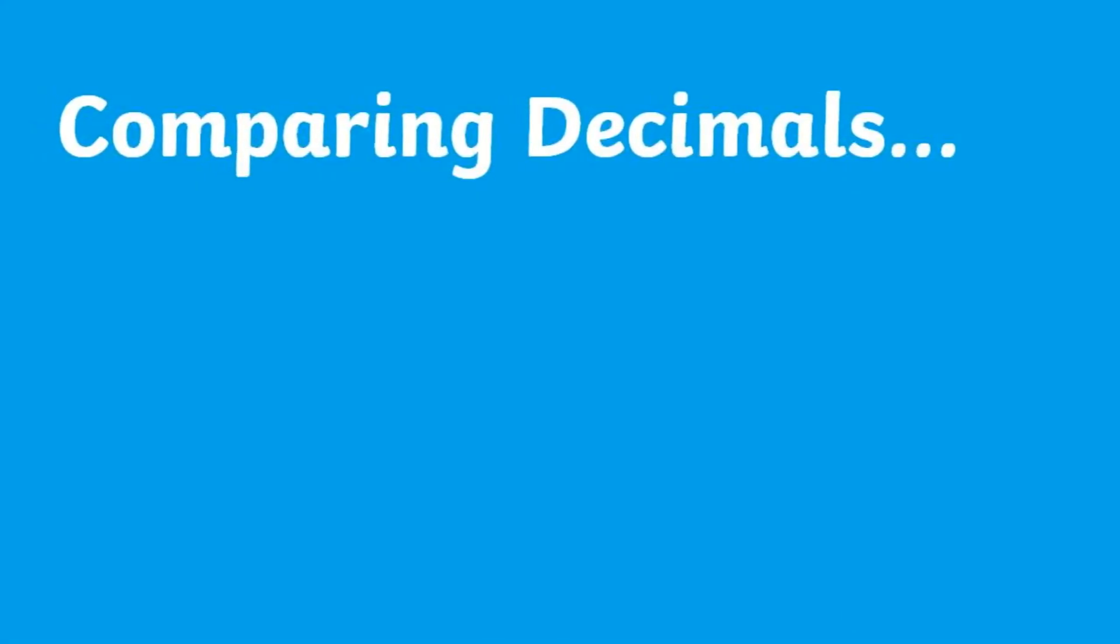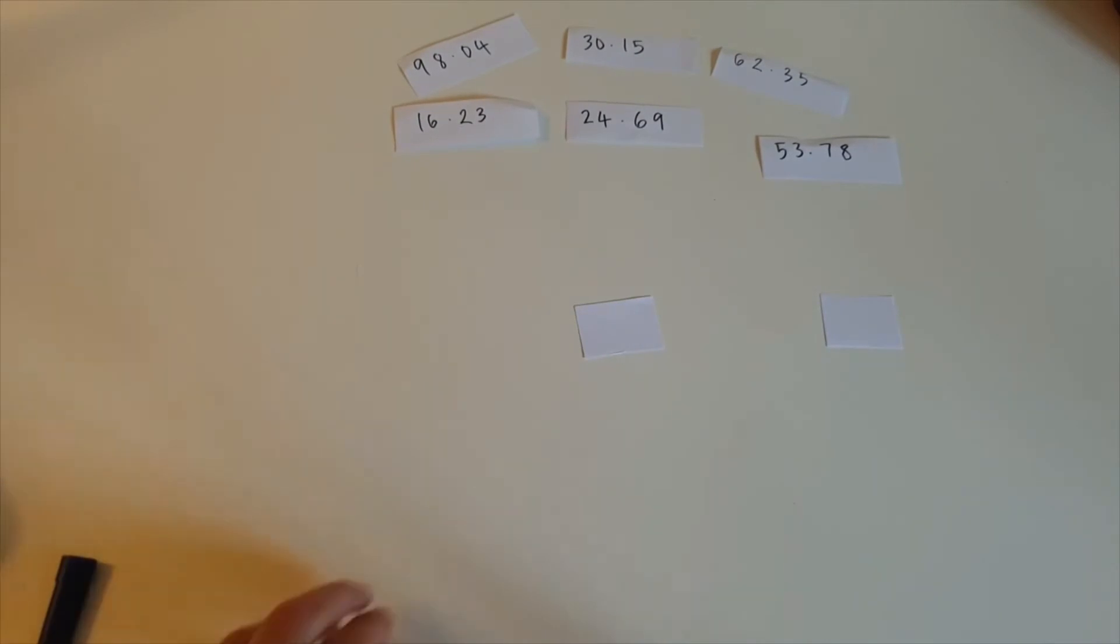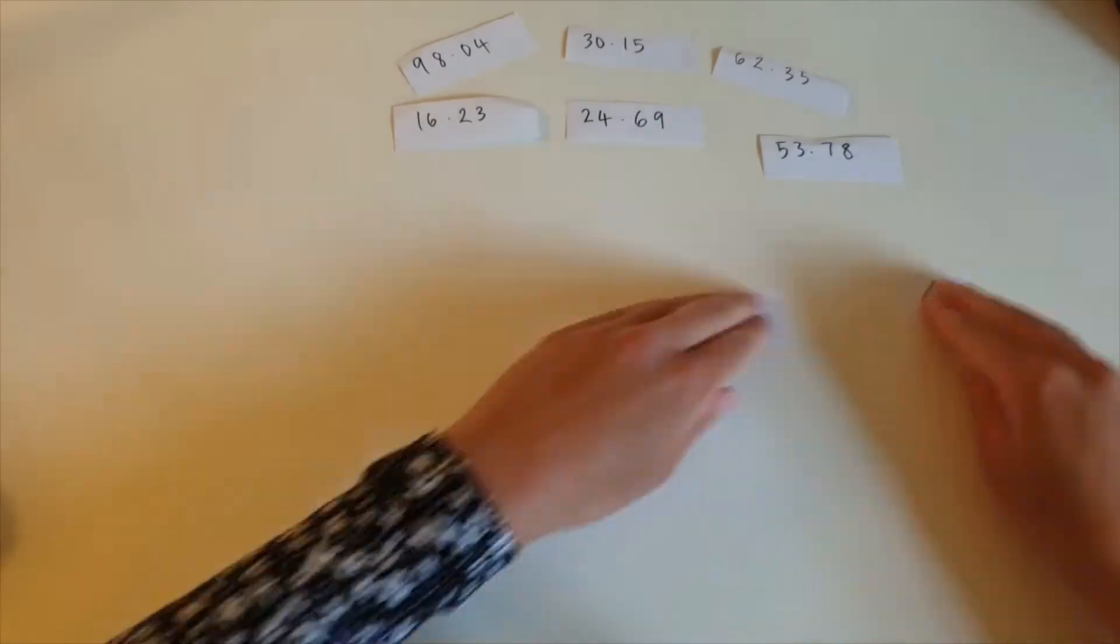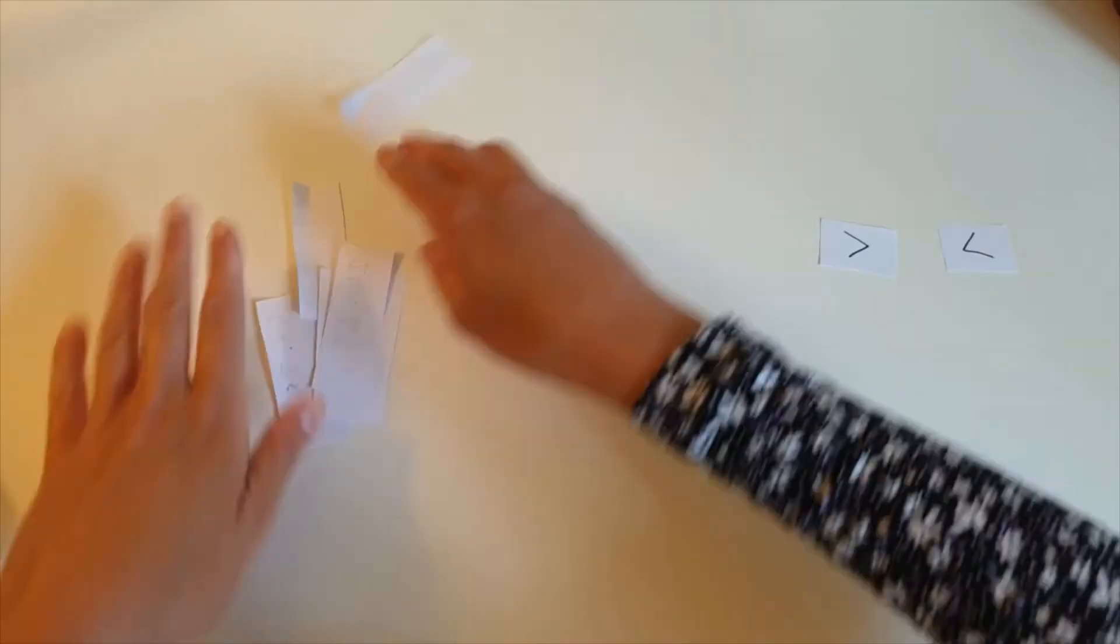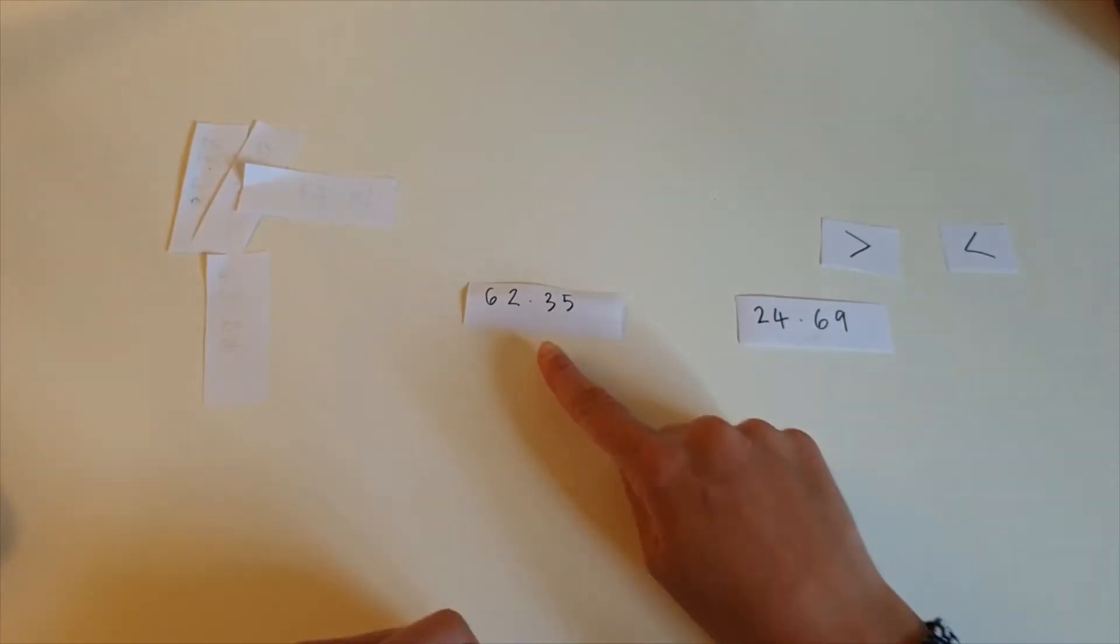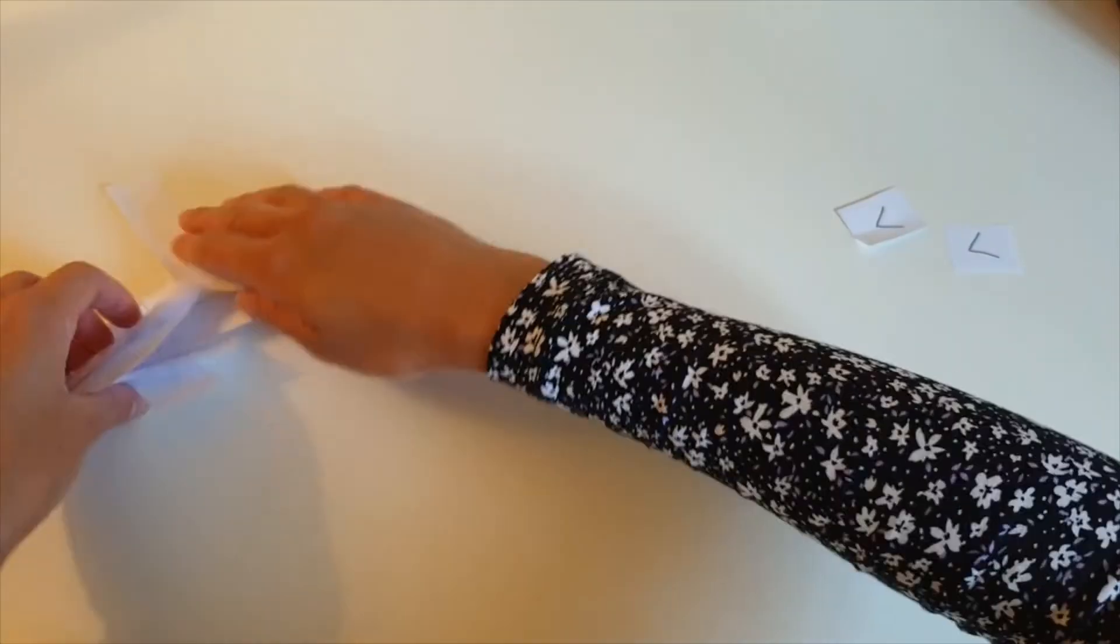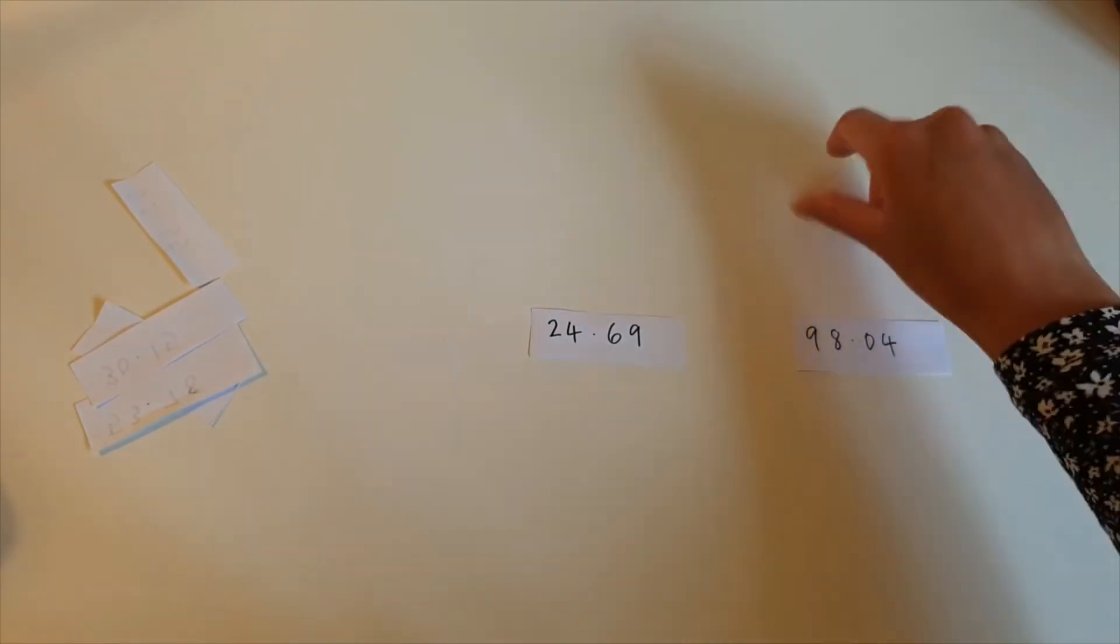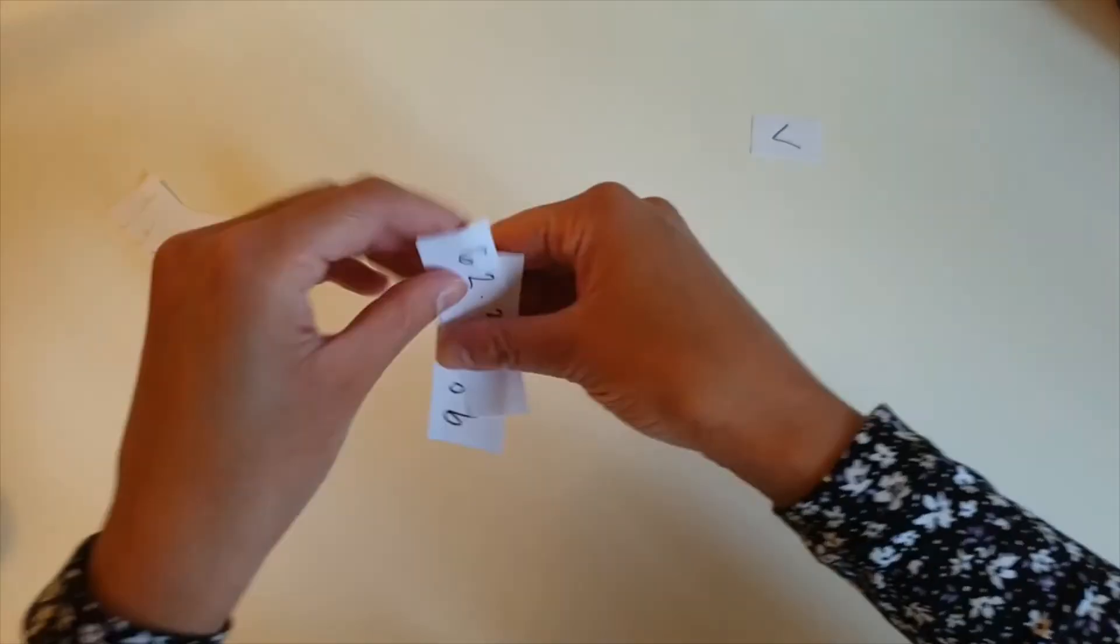And lastly, once children have completed the worksheet they could cut out each completed answer or jot down each answer on a piece of paper and compare them using the greater than and less than symbols. This is a great way to build your child's confidence when dealing with decimals and practicing and understanding the value of decimal numbers.